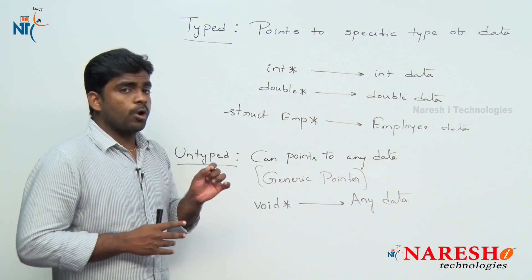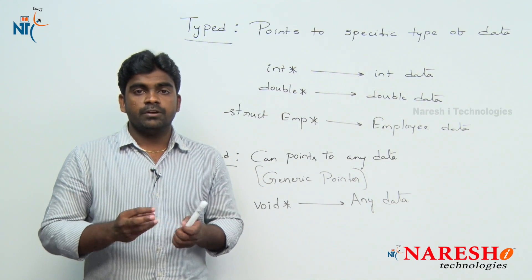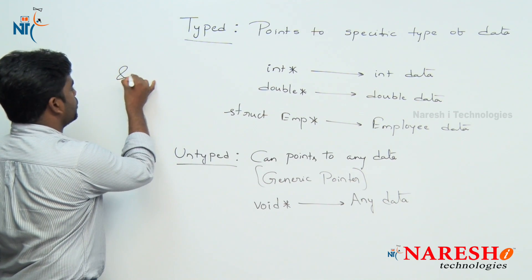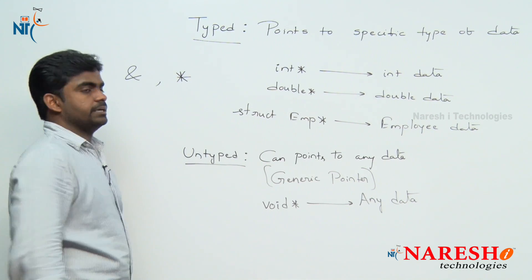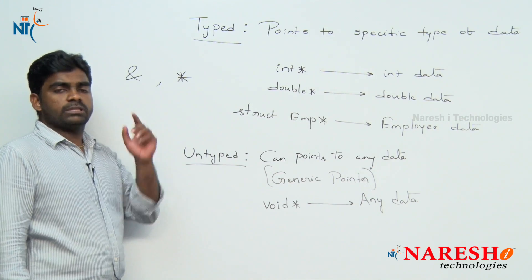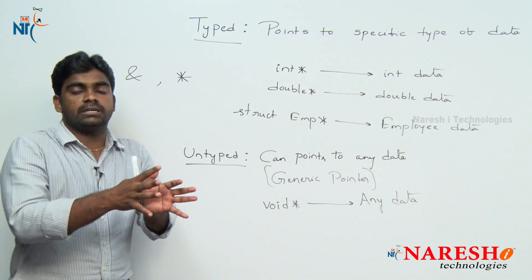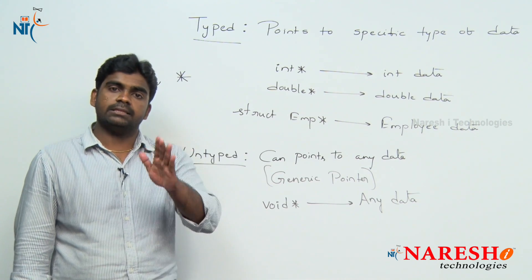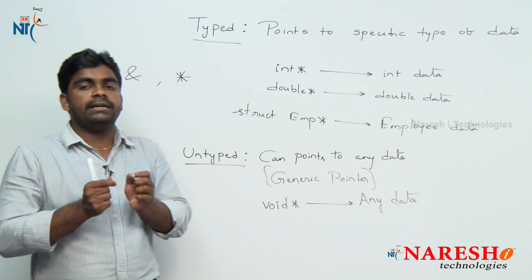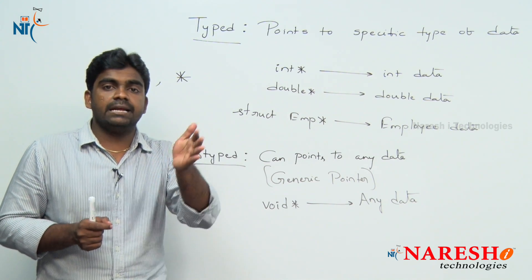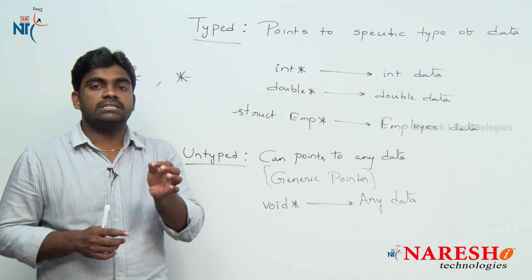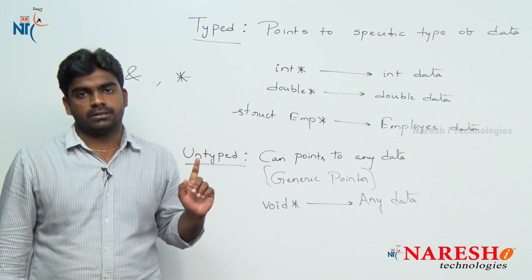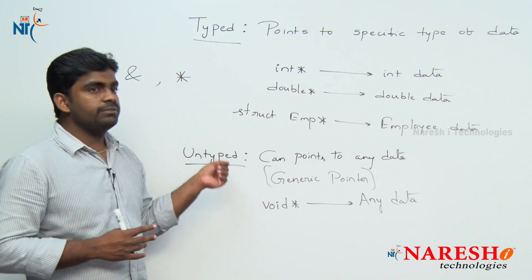Generally in the pointers concept, whatever operation you do, we need the help of two operators only. First is the address operator, second is the pointer operator. The address operator returns the address of a particular variable — the memory location of the variable you specified. The pointer operator returns the value which is inside a specified address. That is the difference between the address operator and pointer operator. We will see all these things with an example.